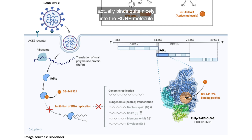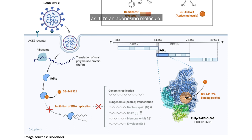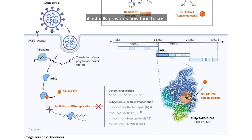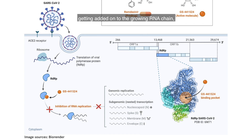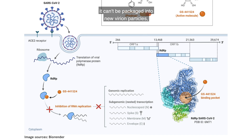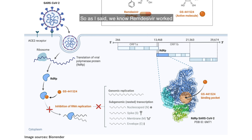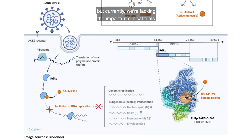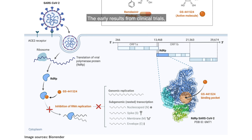The active component of remdesivir actually binds quite nicely into the RDRP molecule from SARS coronavirus 2. It's taken up and looks to the RDRP as if it's an adenosine molecule — one of the building blocks of the RNA — but it's really not. What happens is when it gets taken up by the viral polymerase, it actually prevents new bases from getting added on to the growing RNA chain, resulting in what we call chain termination. This effectively blocks an important step in the virus life cycle. If it can't replicate its own RNA genome, it can't be packaged into new virion particles, and therefore we can't get new infectious virus being made. We know remdesivir works quite well in culture, but currently we're lacking the important clinical trials in humans to know how well this drug will work. The early results from clinical trials have mixed results reported, and unfortunately there have been some adverse effects reported as well.